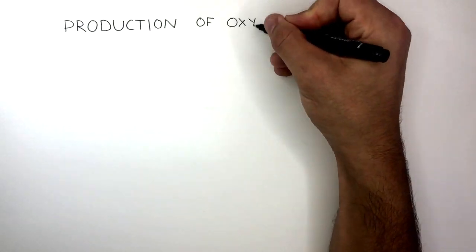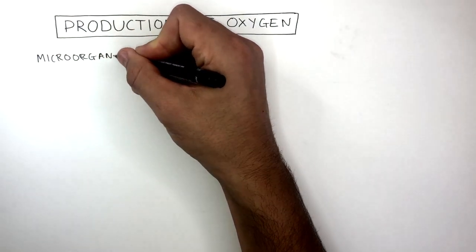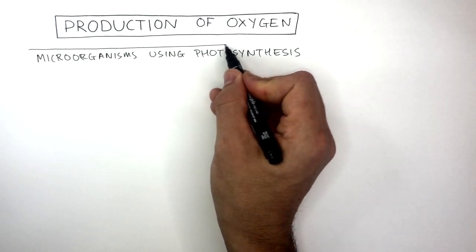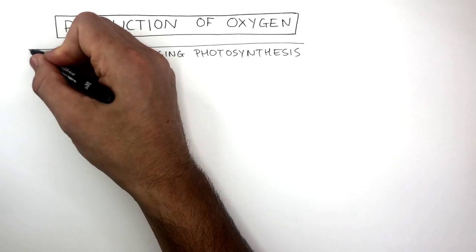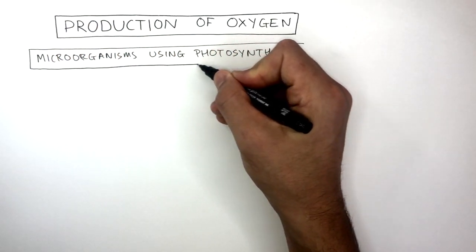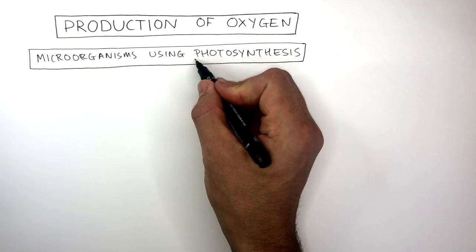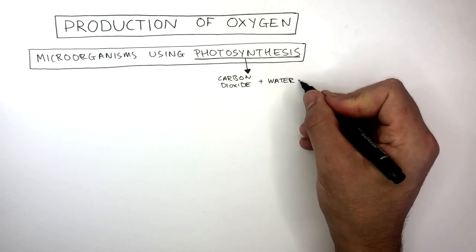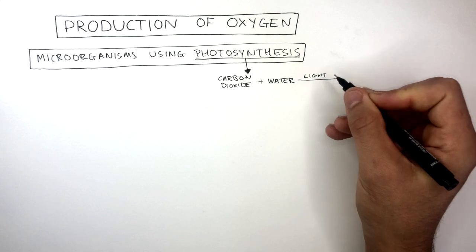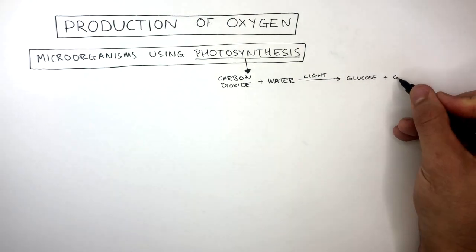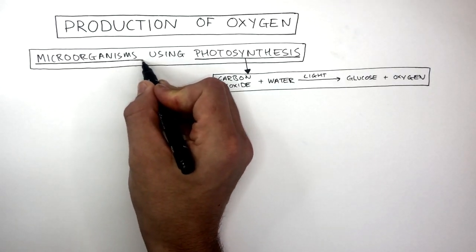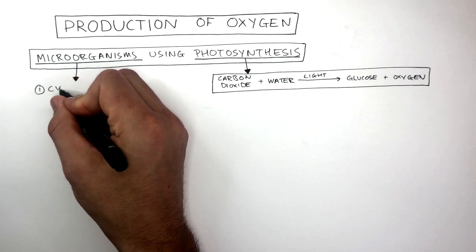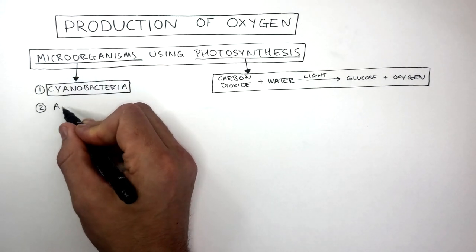Production of oxygen started by microorganisms using photosynthesis. Remember, a microorganism is a living thing that is too small to see, so you need a microscope to be able to see it. Photosynthesis is a chemical reaction where carbon dioxide and water react using light to produce glucose and oxygen. The microorganisms first to produce oxygen by photosynthesis were cyanobacteria and then algae.